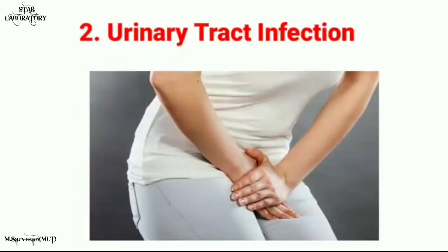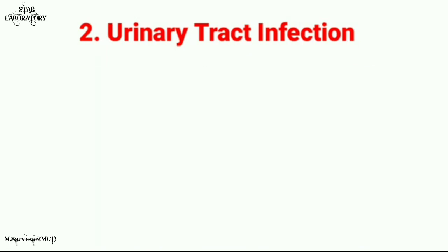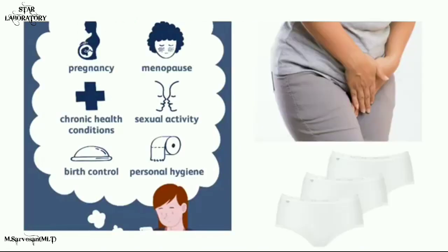The second common disease condition is urinary tract infection. As the name suggests, bacteria, fungi, or other parasites have infected your urinary tract. UTI should be treated within a short period of time — if you fail to get proper treatment, the infection can move up to your kidneys and become more complicated. The main reasons for UTI are pregnancy, menopause, chronic health conditions, sexual activity, birth control methods, personal hygiene, and wearing tight clothing for long periods of time.